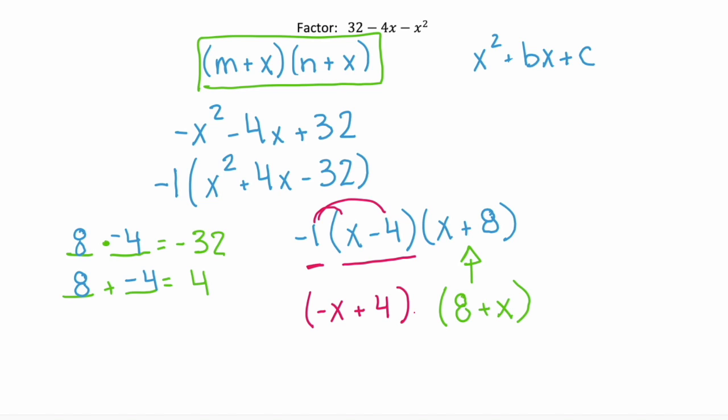And now we're adding negative x and 4. So again, the order doesn't matter. So you can rewrite that as 4 minus x. And then our second binomial was 8 plus x.